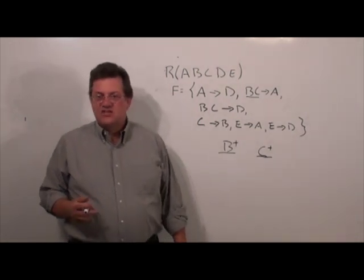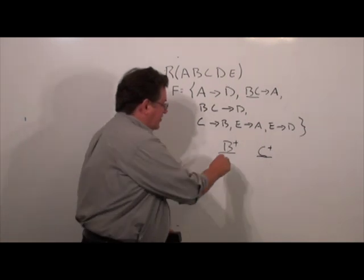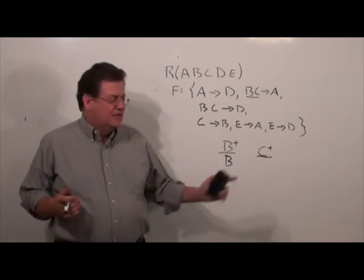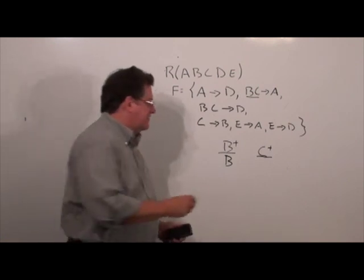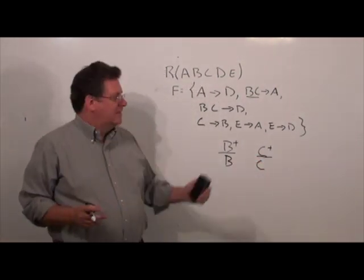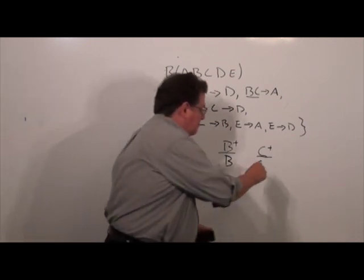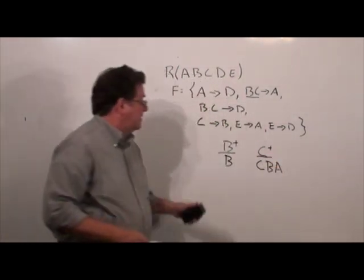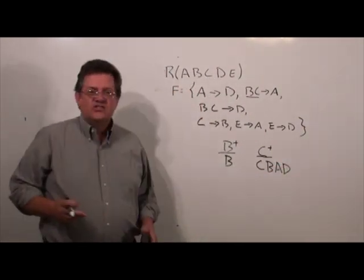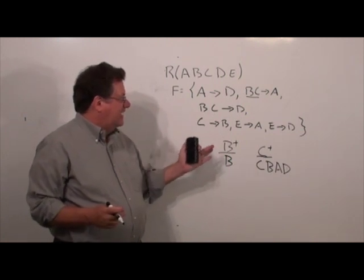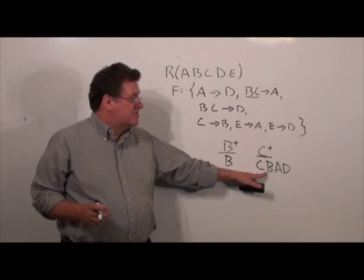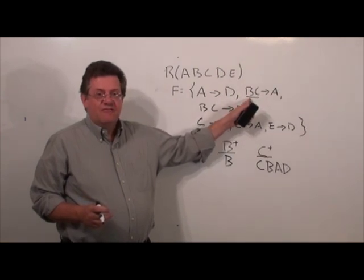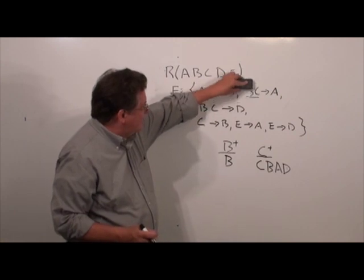B closure by reflexivity is just B, and scanning the FDs, there's nothing else, so B closure just has B — meaning we cannot eliminate C. Let's try C closure. Initially through reflexivity, C closure has C. We see C determines B, then having BC gives us A, and BC also determines D. So C closure is {B, C, A, D}. Since C closure includes B, we can eliminate B from the left-hand side of BC→A, and we do so immediately.